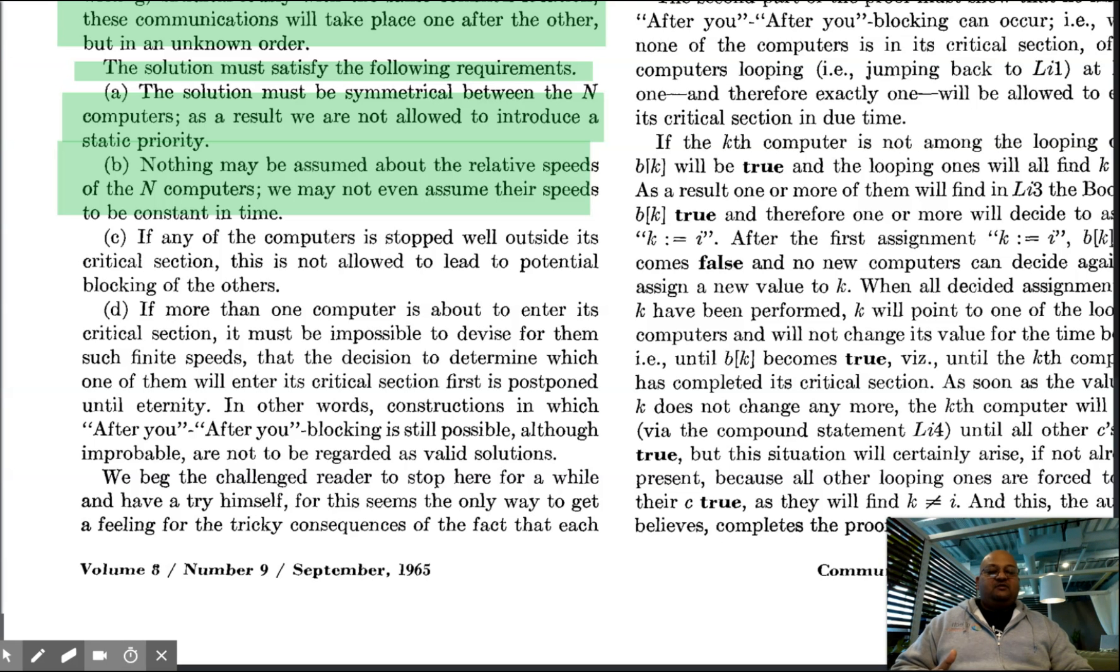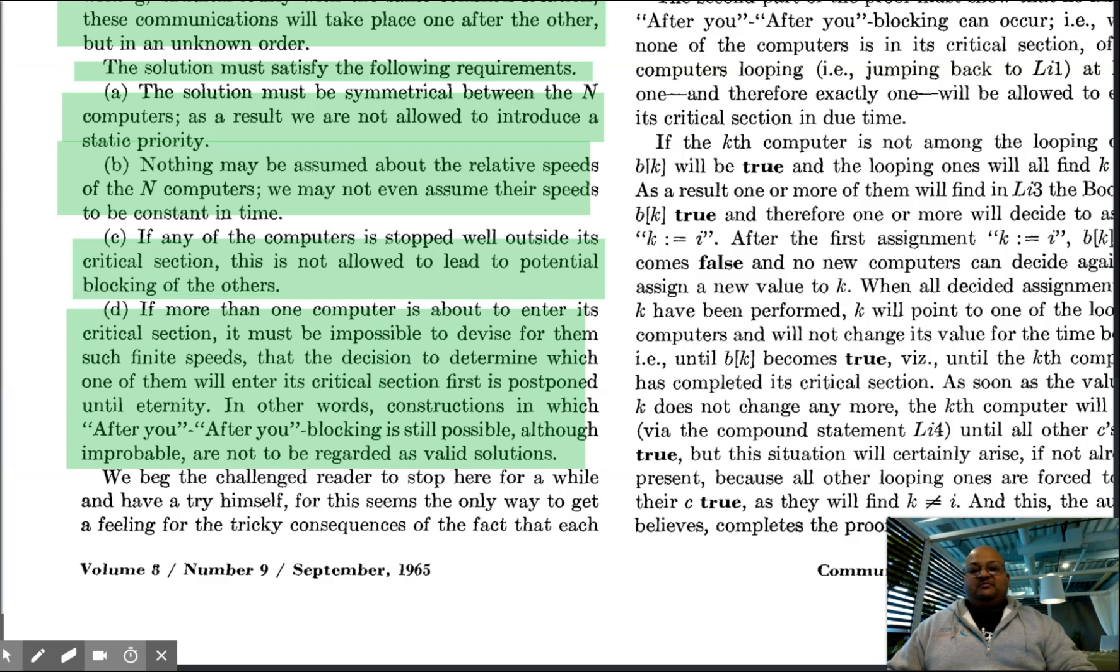And then we have a couple of liveness properties, which ensure that the system as a whole makes progress. The first one says that if a process is outside its critical section, it cannot block any of the other processes. And the second liveness property says that if one or more processes are about to enter the critical sections, then at least one of them is able to enter the critical section.